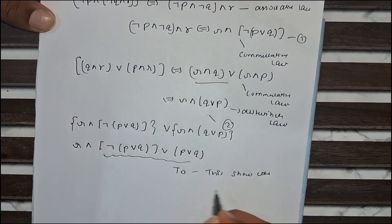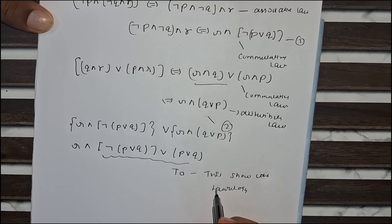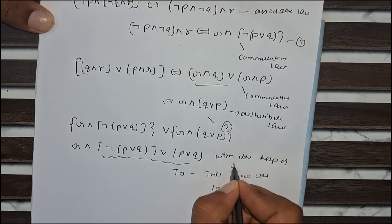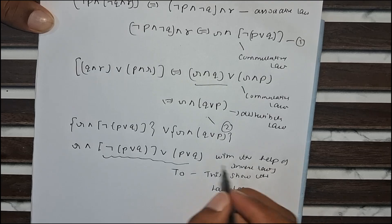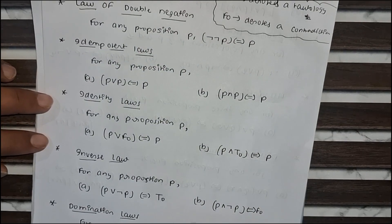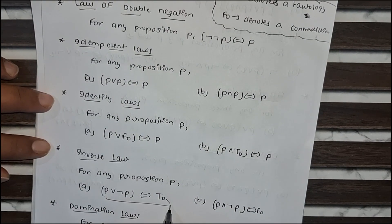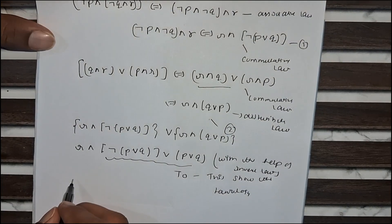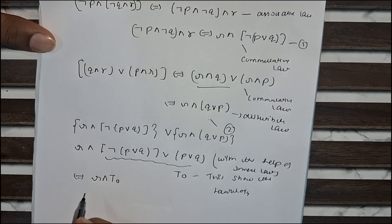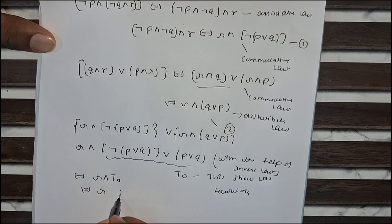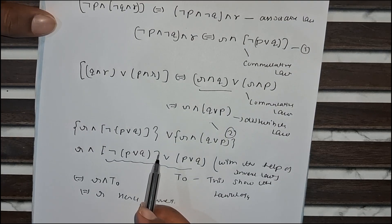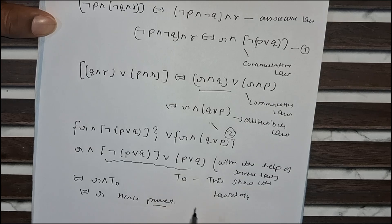This shows a tautology, because with the help of the inverse law — as you can clearly see, this is our inverse law where T₀ (tautology) is shown — the expression becomes R conjunction T₀, which is equivalent to R. Hence proved. One more thing: before solving these types of questions on laws of logic, you have to go through all the properties, then you are able to solve these types of questions. Thank you.